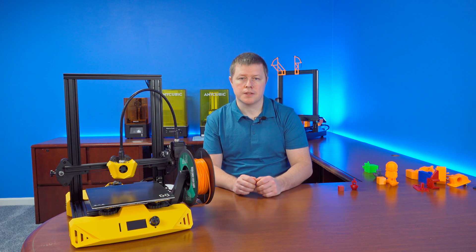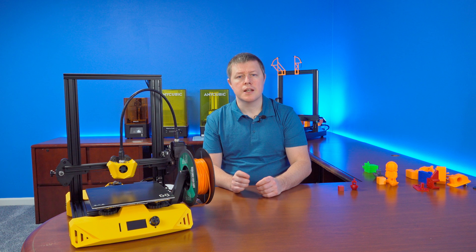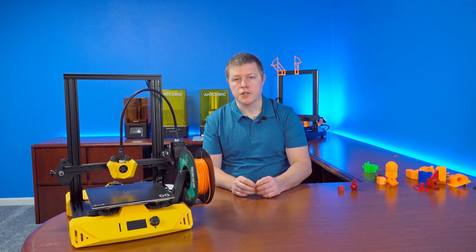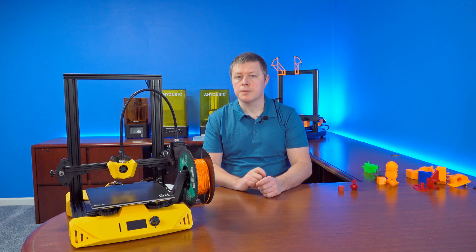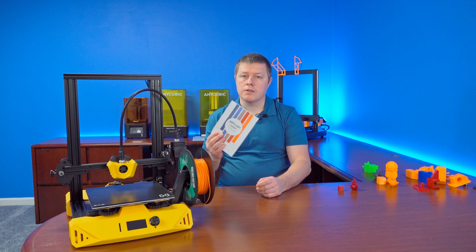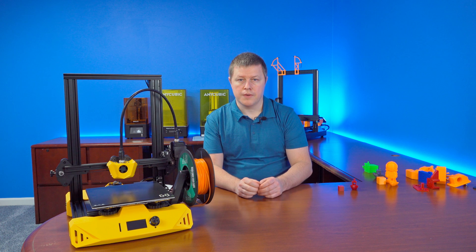Now it was time to set up a slicer. The SD card includes three Cura profiles, plus an install file for version 4.6.2. I opted to use a more up-to-date version to see if these profiles could still be installed. And to my surprise, they did. And again, the user manual did an outstanding job explaining how to set up the new printer and how to import the profiles.